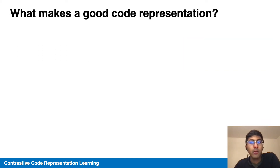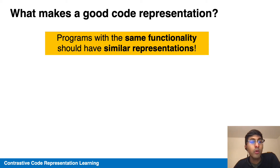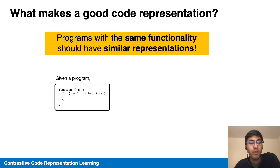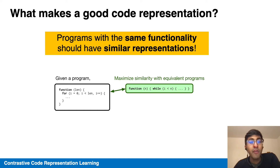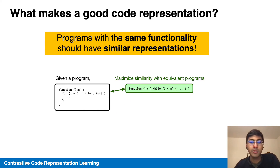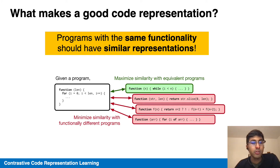Our hypothesis is that a good code representation is one where programs with the same functionality have similar representations. Given a program using a for-loop implementation choice, it should have high similarity in representation space with equivalent programs, like one with a while loop. This can be encoded in a contrastive objective that maximizes representational similarity. But to prevent degenerate solutions, we will also want to minimize similarity with functionally different programs, like the negatives shown in red.